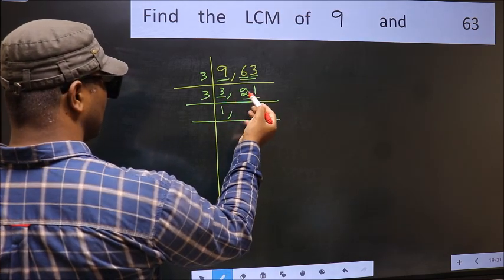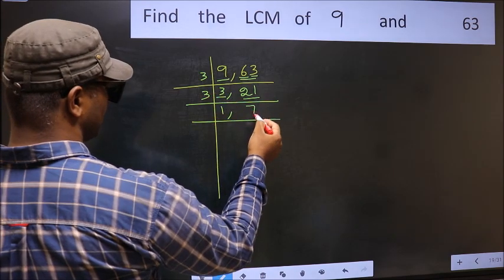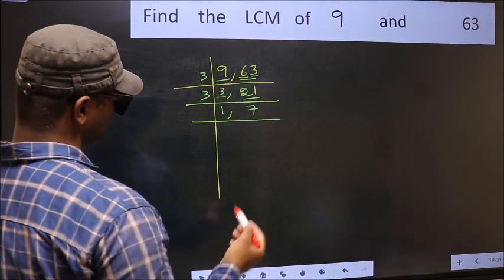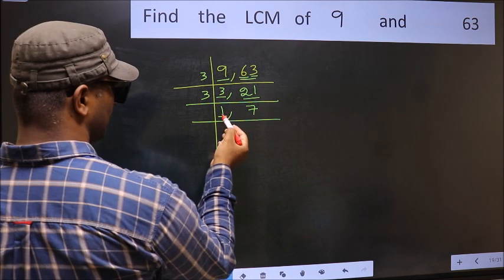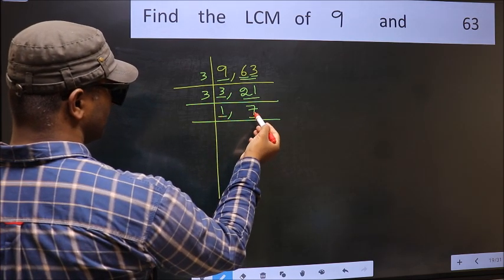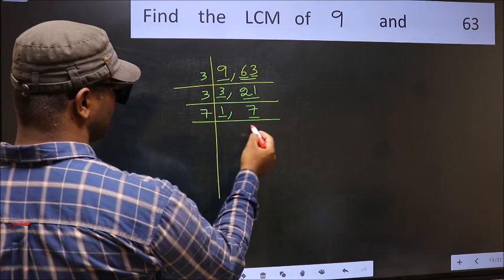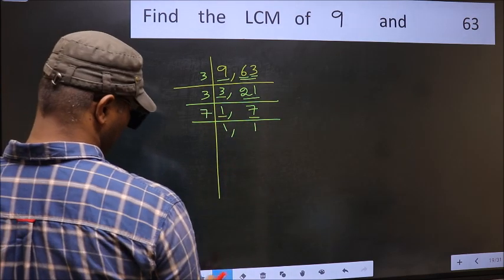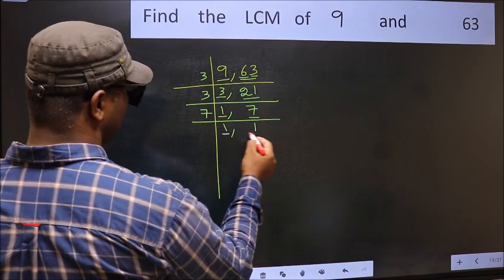The other number is 21. When do we get 21 in the 3 table? 3 times 7 is 21. Now we got 1 here. So focus on the next number, 7. 7 is a prime number, so 7 once is 7. So we got 1 in both places.